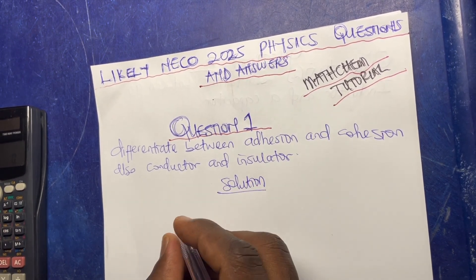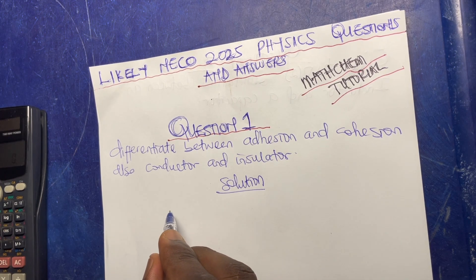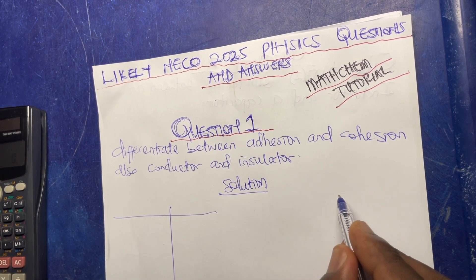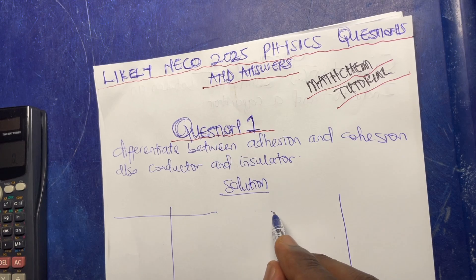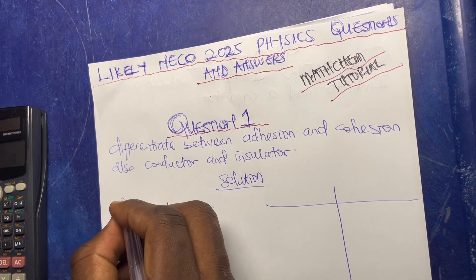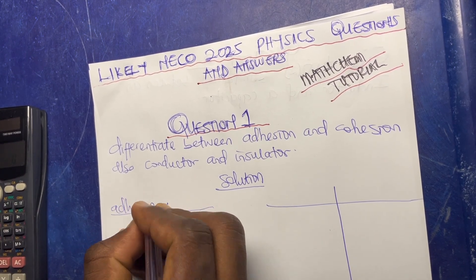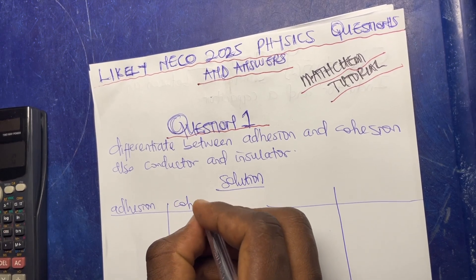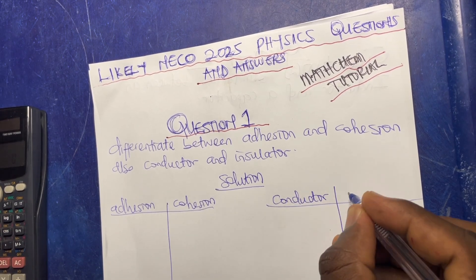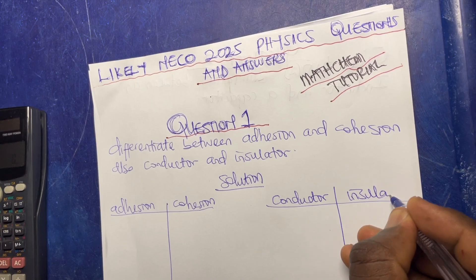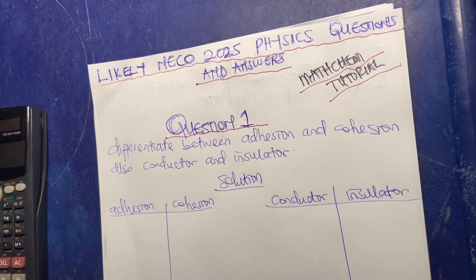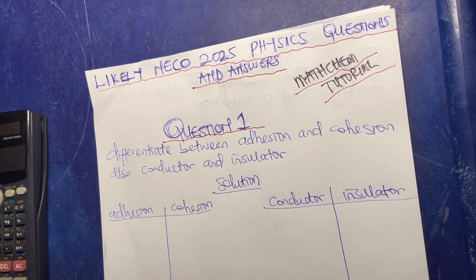Whenever you are asked to differentiate, ensure you tabulate. So let me use this place for adhesion and cohesion, and then this place for conductor and insulator. Here is adhesion and cohesion, here is conductor and insulator.